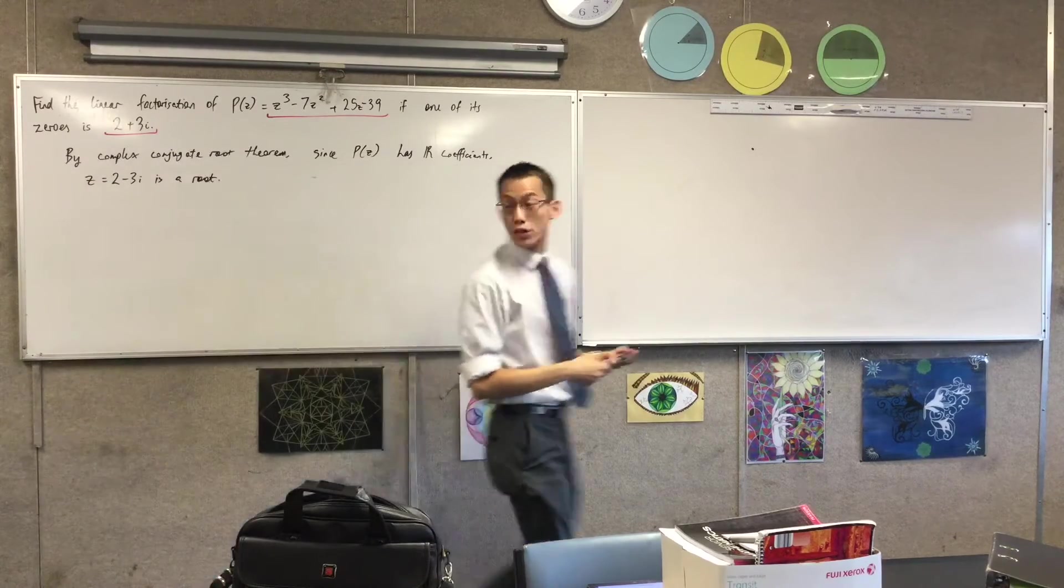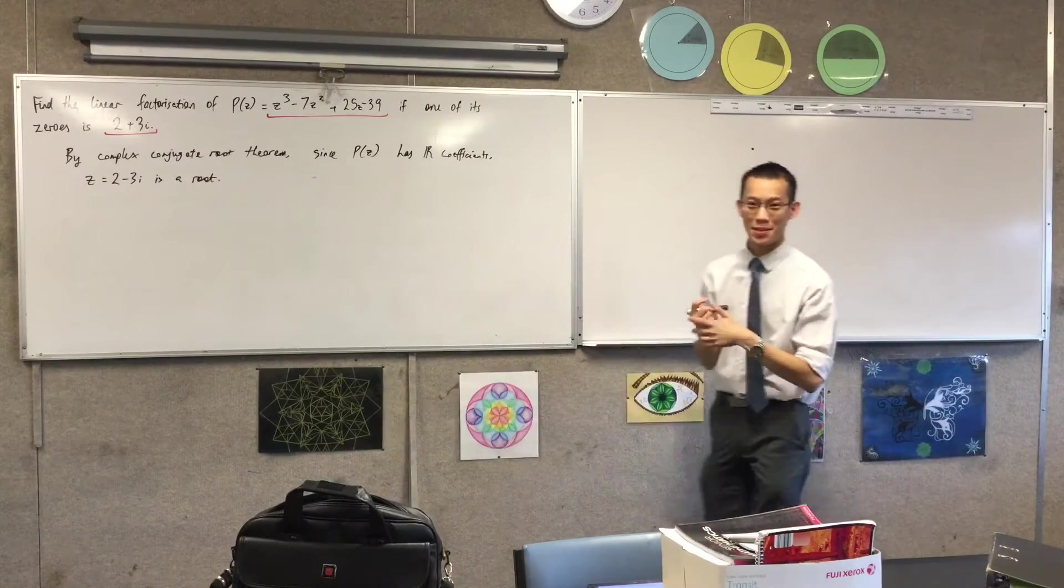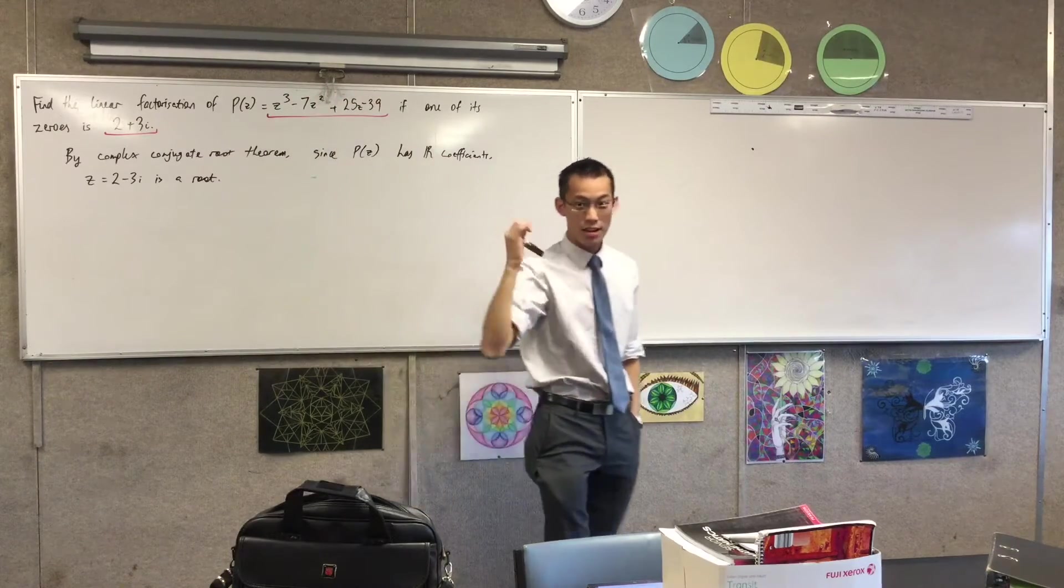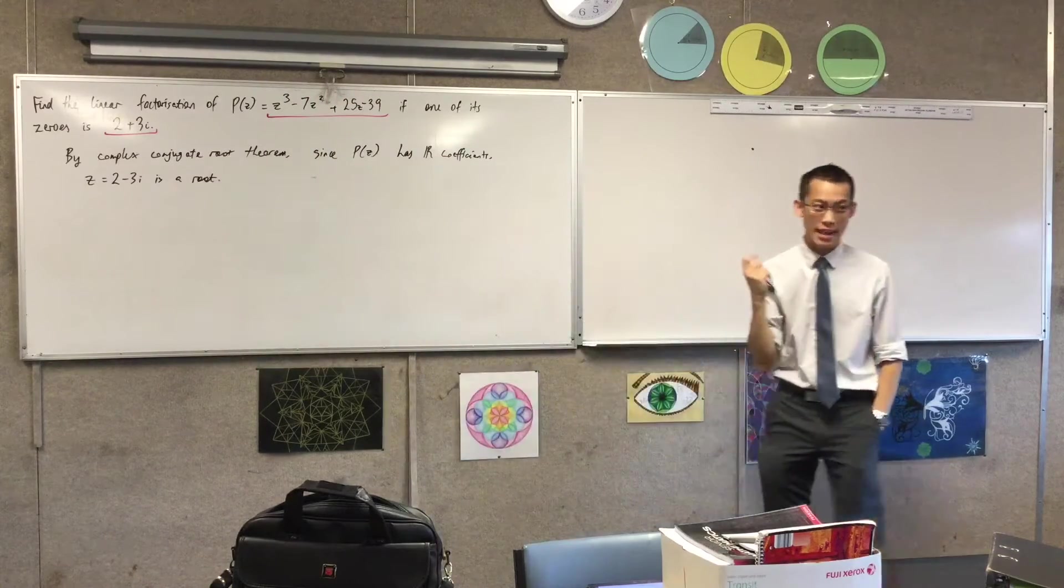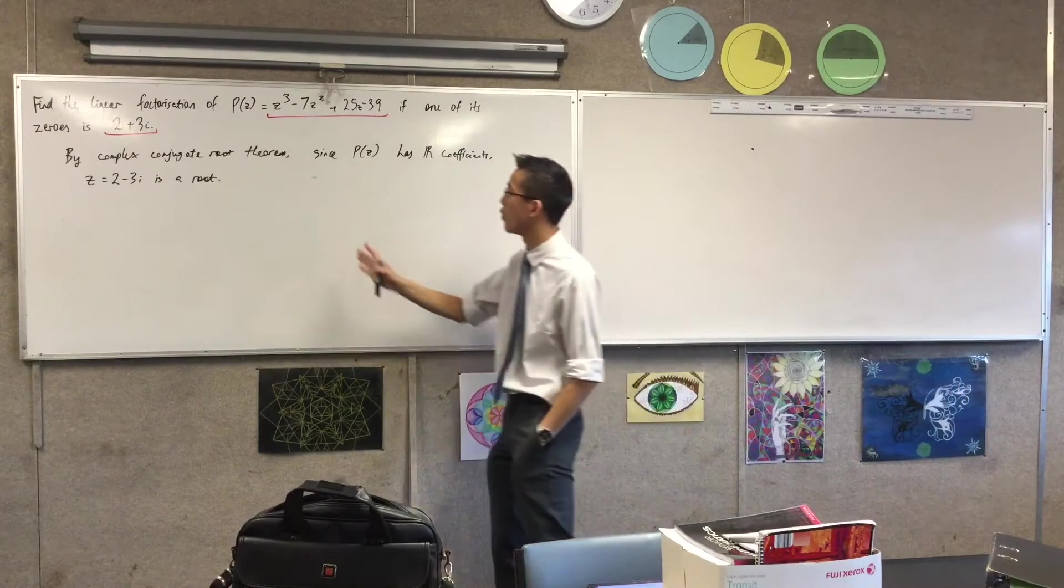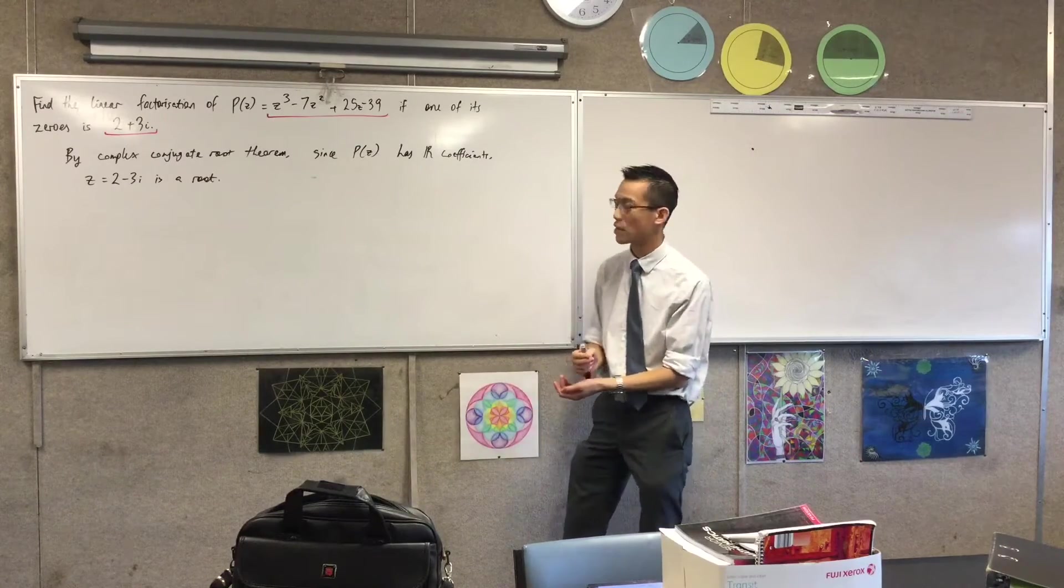Now this is great for two reasons. Number one, thinking back to the fundamental theorem of algebra, this is a polynomial of degree three, which means it has how many complex roots? Three. Exactly three, right? No fewer, no more. So I've already got two of them, I only need to find the last one. That'll be useful to me in a second.